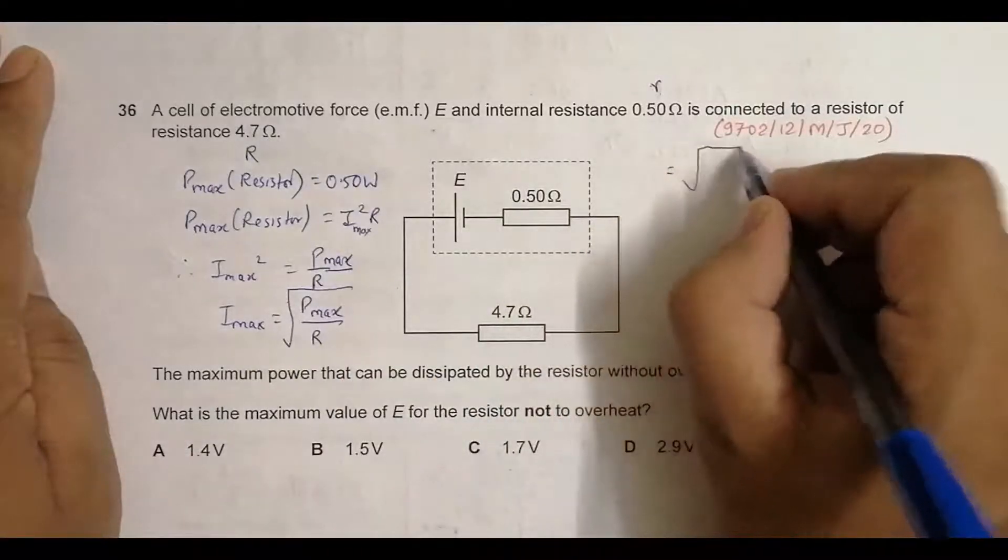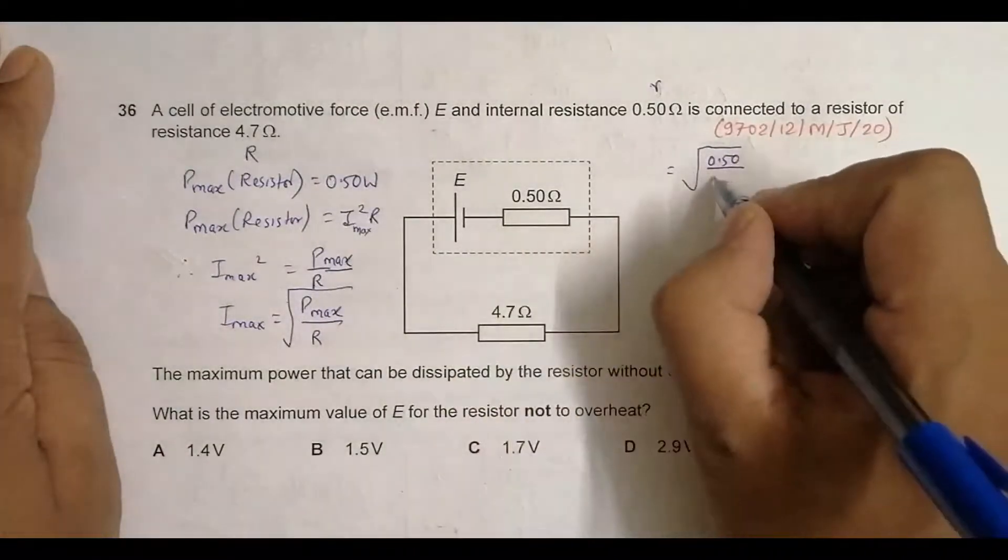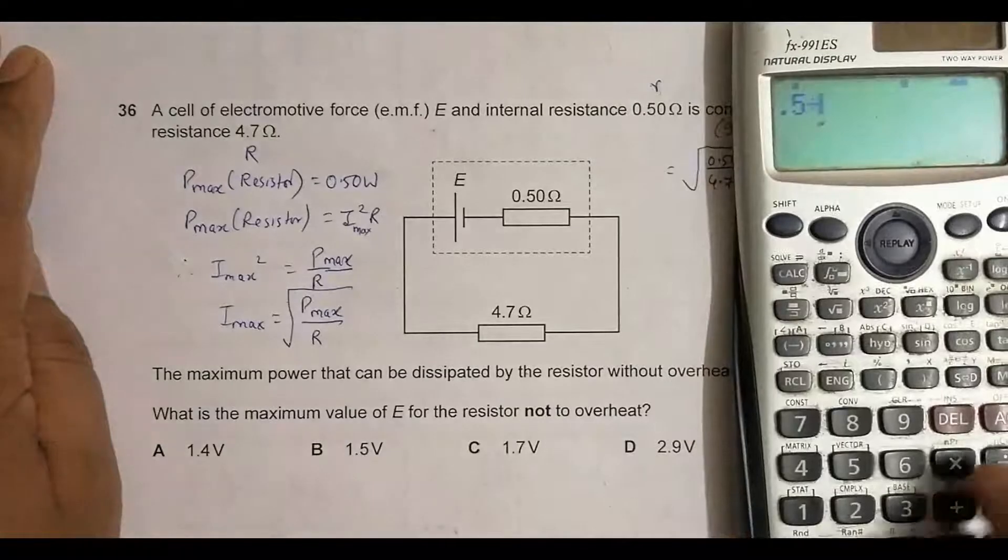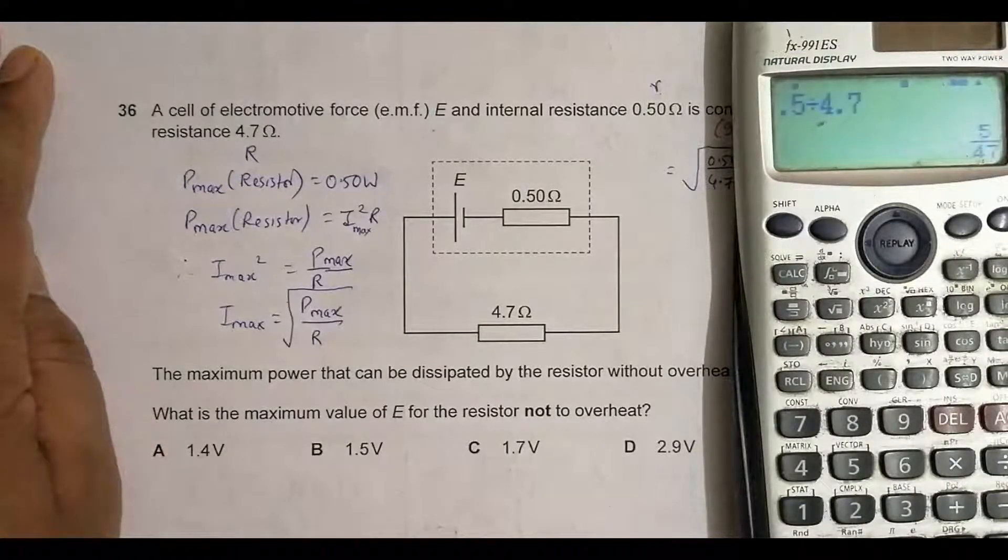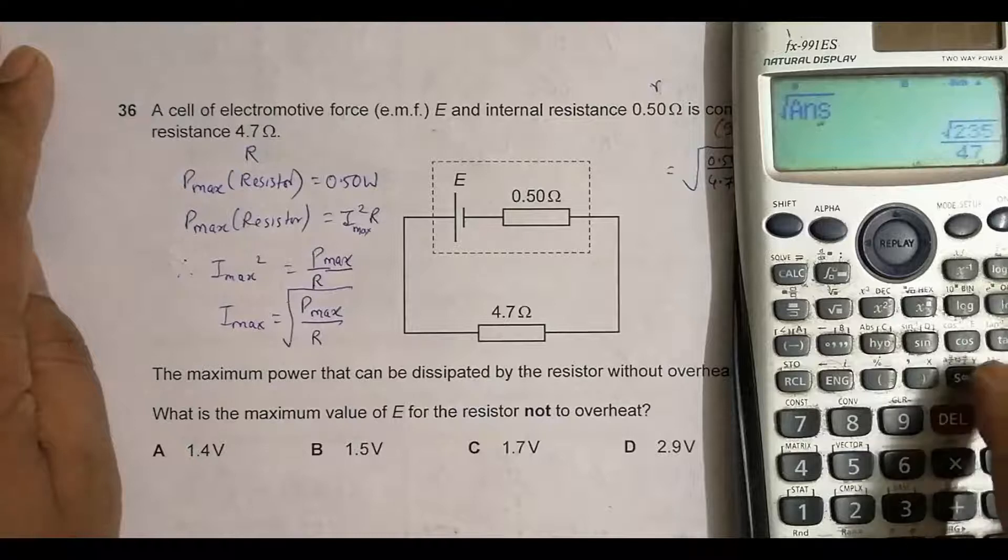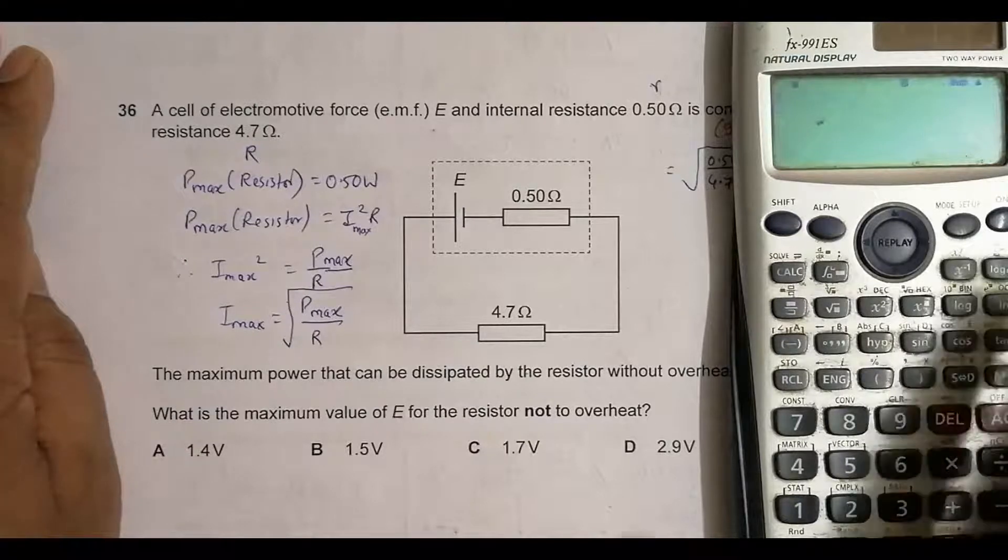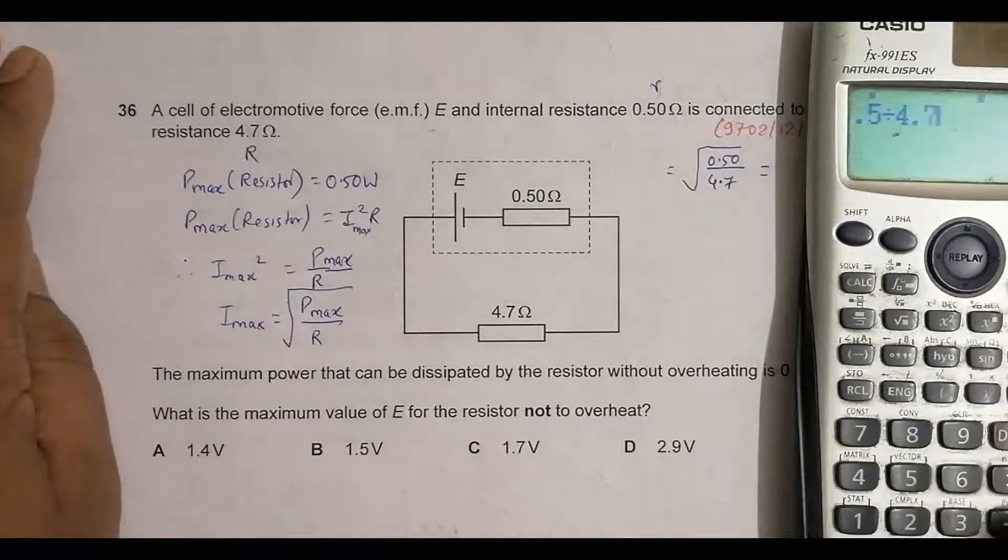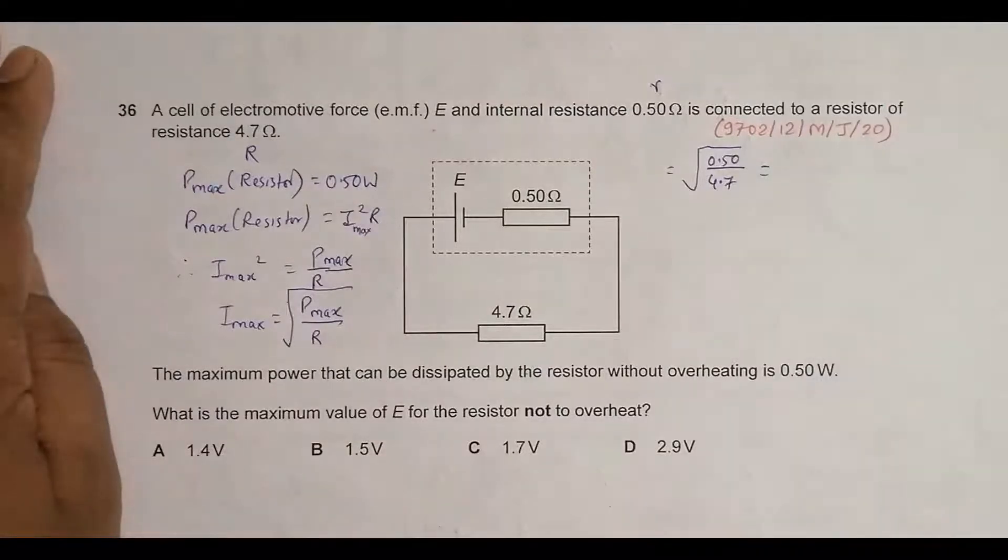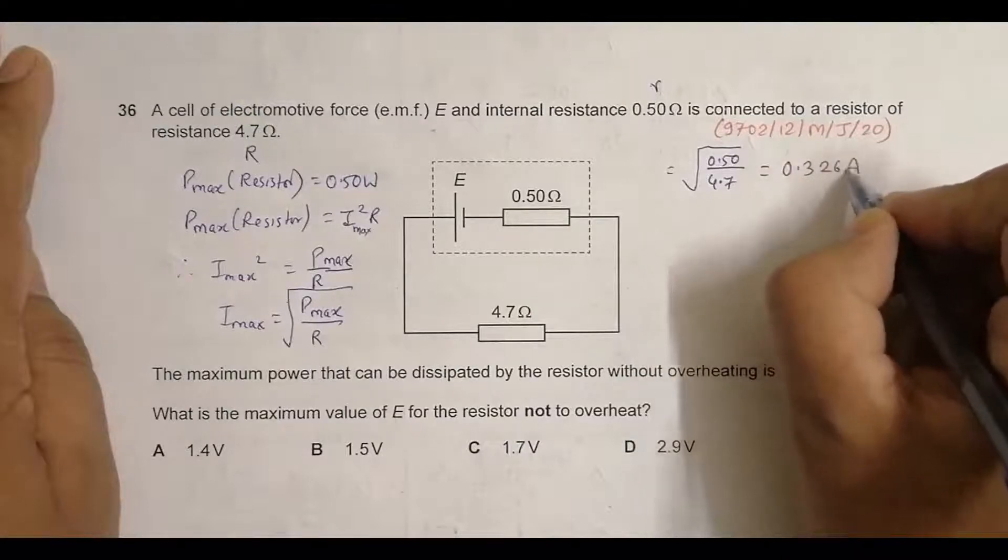Its value will be the square root of P_max, which is 0.50, divided by R, which is 4.7Ω. So 0.5 divided by 4.7 equals... Sorry, I forgot the approach. It's the power of 0.5, so we get 0.326 amperes.